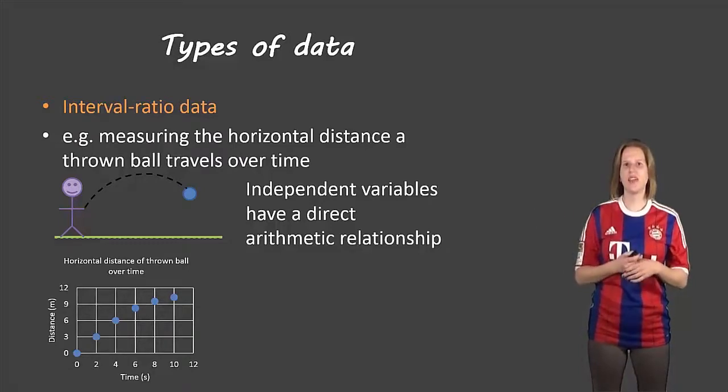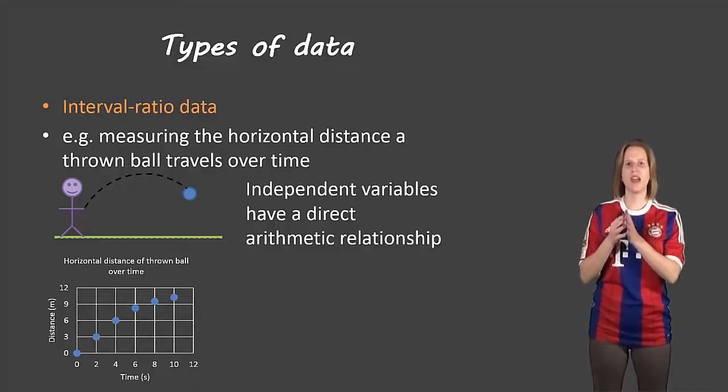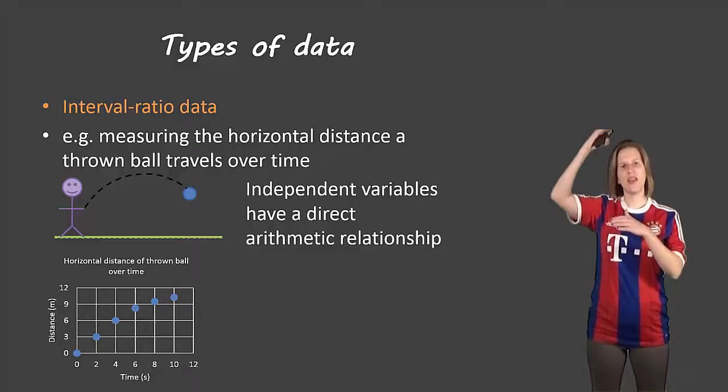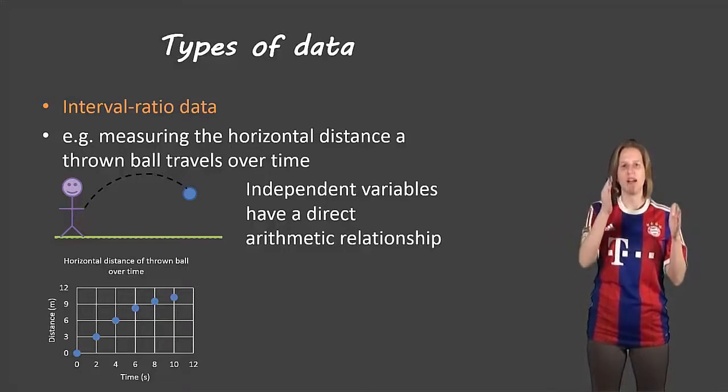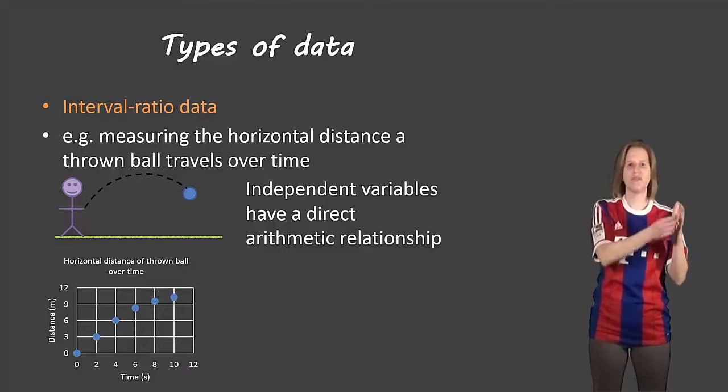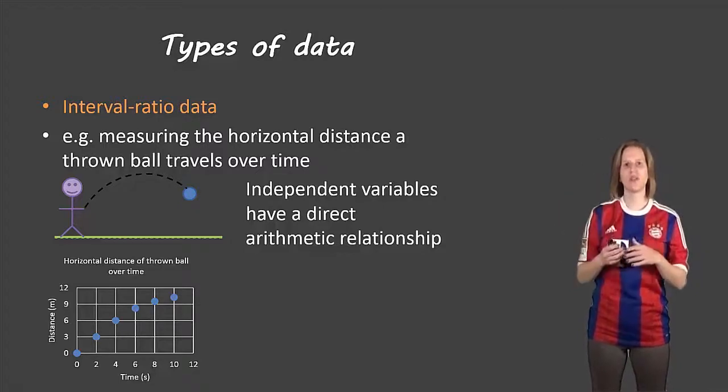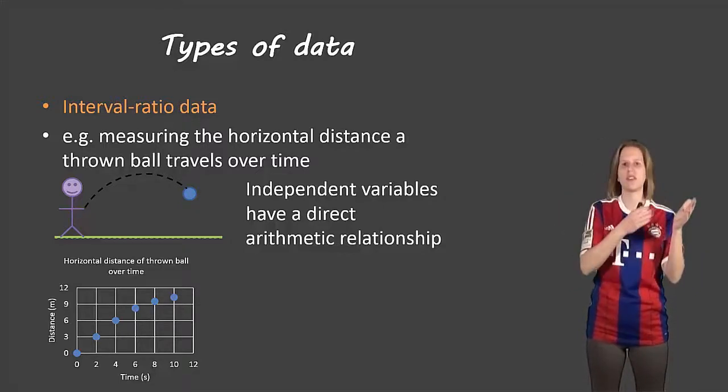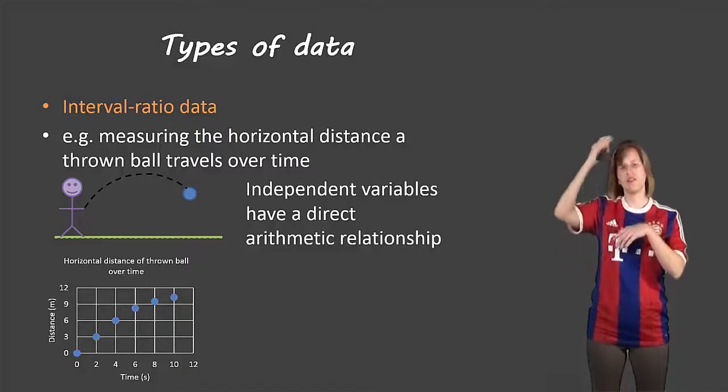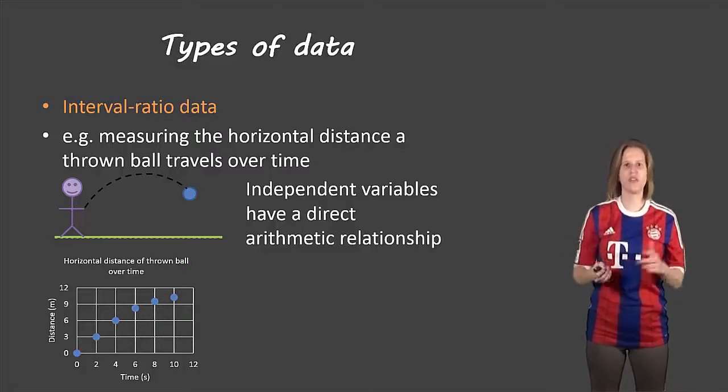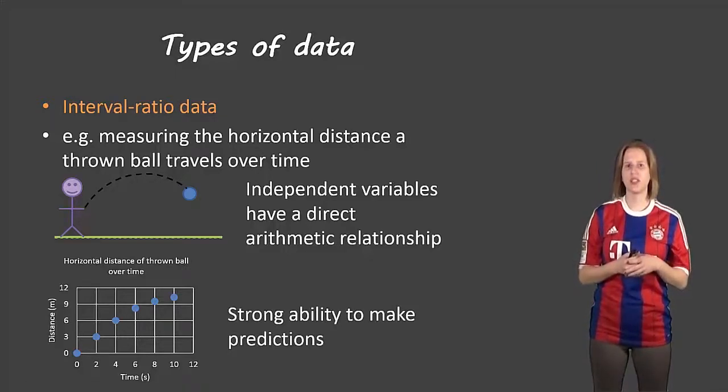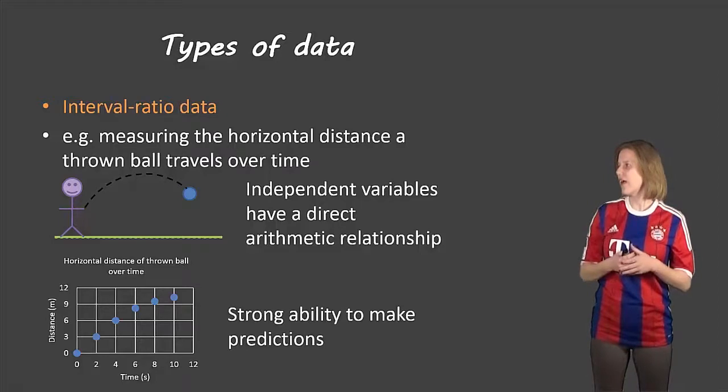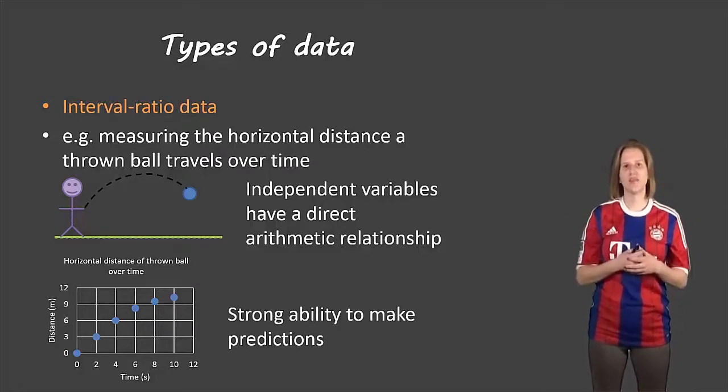So for these we use scatter plots. These do look very similar to the line graphs. The main difference is that along the x-axis, that's the horizontal one, and the y-axis, that's the vertical one, along those axes it's very set interval values along each of them. So it'll always be one meter differences or two meter differences, or one second differences or two second differences, or whatever the case may be. And these have a very strong ability to make predictions. So based on this diagram, at 12 seconds we will probably have a very good idea of the distance of that ball.